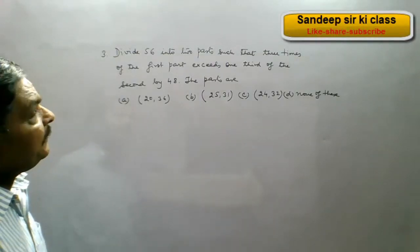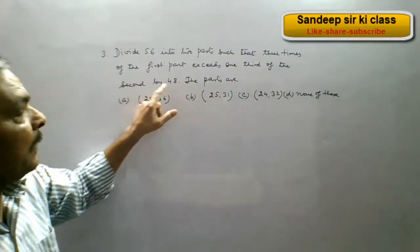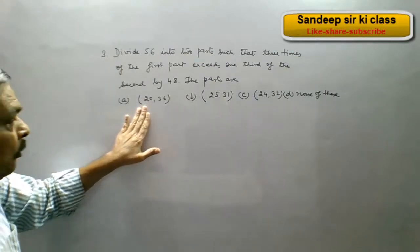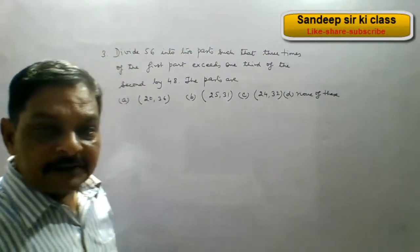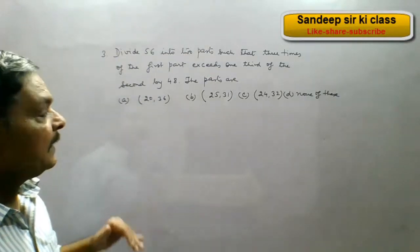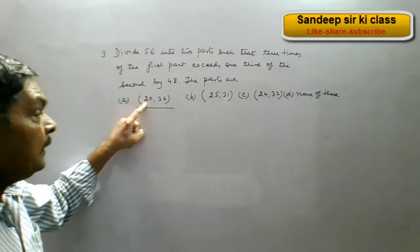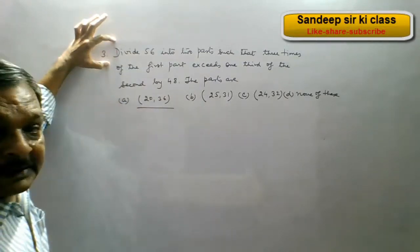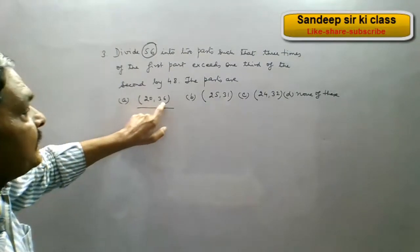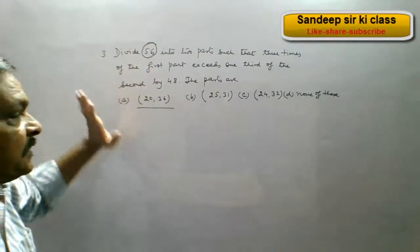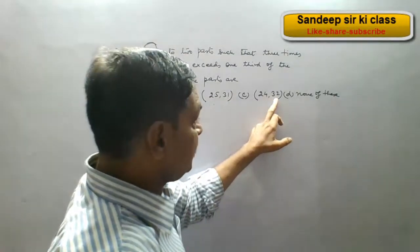Question number 3: divide 56 into 2 parts such that 3 times the first part exceeds one-third of the second by 48. The options are: A — 20 and 36, B — 25 and 31, C — 24 and 32, D — none of these. We verify that all options sum to 56: 20+36=56, 25+31=56, and 24+32=56.